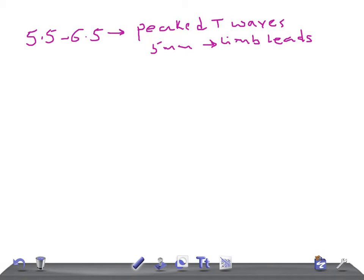5 mm and greater than 10 mm in precordial leads. Remember also, symmetric tented peaked waves of any height. Normal T-waves are asymmetric.